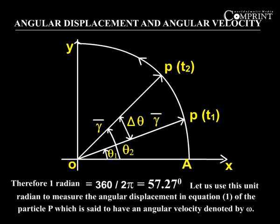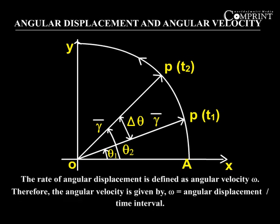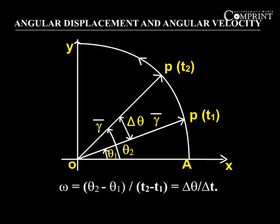Let us use this unit radian to measure the angular displacement. The particle P is said to have an angular velocity denoted by omega. The rate of angular displacement is defined as the angular velocity omega. Therefore, the angular velocity is given by omega equals angular displacement by time interval, omega equals theta2 minus theta1 by t2 minus t1, that is delta theta by delta t.